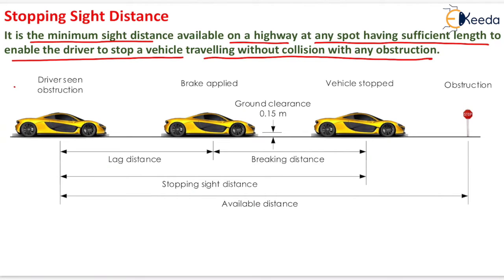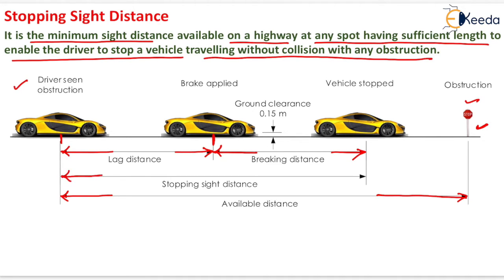A diagram is shown on screen. At this point the driver has seen the obstruction. When the driver sees the obstruction, the message goes into his mind and he takes some time before the application of the brake. During this time, the distance traveled by the vehicle is known as lag distance. At this point the driver applies the brake and after application of brake the vehicle travels some distance, which is known as braking distance. The stopping sight distance is the total of these distances up to the obstruction.